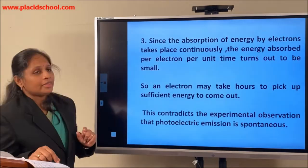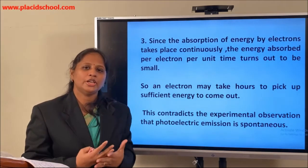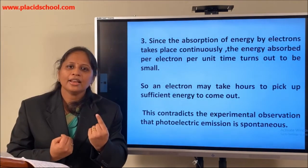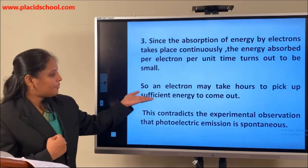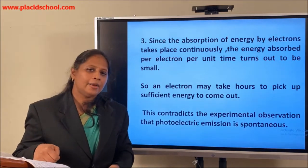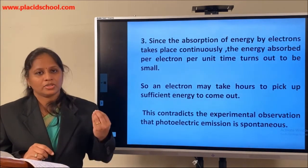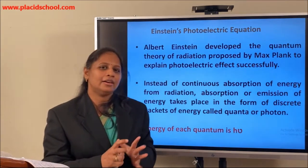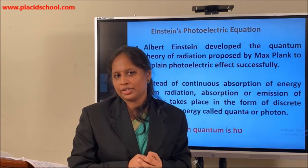The third failure: according to wave theory, there is continuous absorption of energy by the electrons from the incident light. The energy absorbed per electron per unit time is very small, so for a single electron to acquire sufficient energy to come out of the metal surface, it would take sometimes hours. This contradicts the experimental observation which says photoemission is an instantaneous process taking less than 10⁻⁹ seconds. These are the three reasons why wave theory could not explain the photoelectric effect.